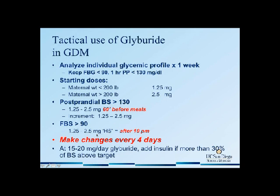I also instruct the patient to take glyburide after 10 p.m. to target her fasting glucose values. This is different from the CDAP website, which recommends the Langer method of dosing glyburide as BID. With glyburide, it's important to make changes every four days to allow for a steady state. Generally, if I reach a maximum dose of 10 milligrams per segment or a total dose of 15 to 20 milligrams per day, then I start adding insulin to control blood glucose if needed — when more than 30% of blood glucose values are above target.